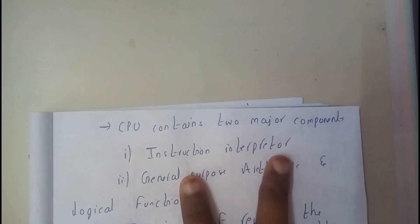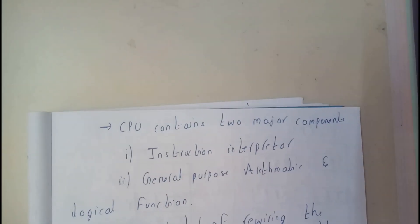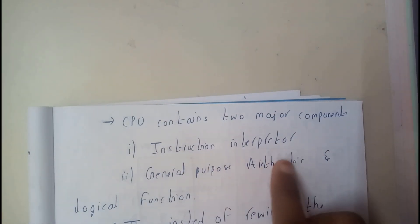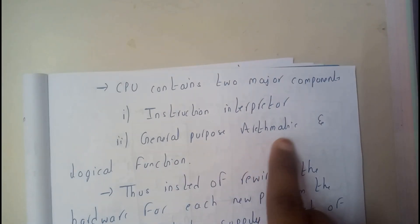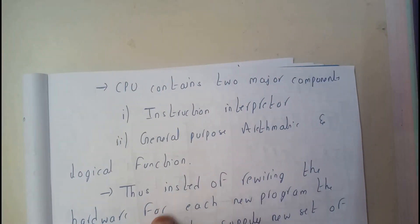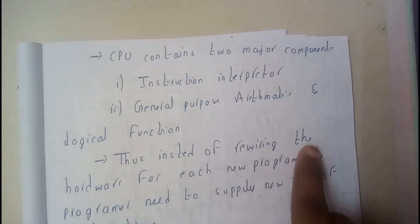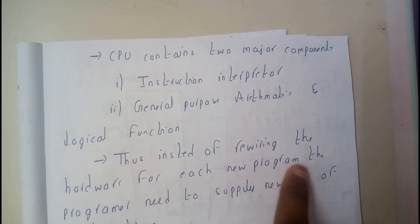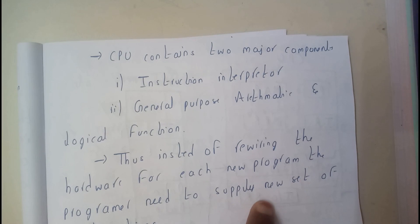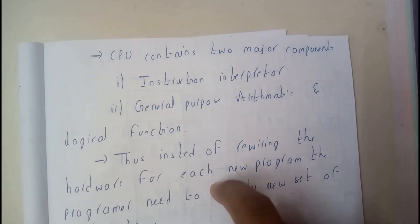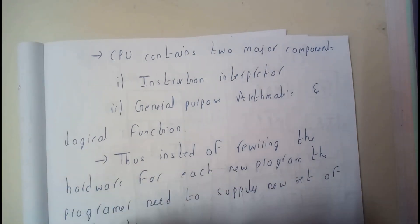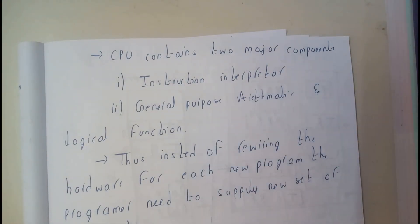CPU contains two major components: instruction interpreter and general purpose arithmetic and logical functions. Thus instead of rewriting the hardware for every new program, the programmer needs to supply new set of instructions. If we create a logical gate for addition, whenever we need subtraction, we need to change it completely. We need to throw it in dustbin and create for subtraction. So why like this? Why we need to do hardwired always?